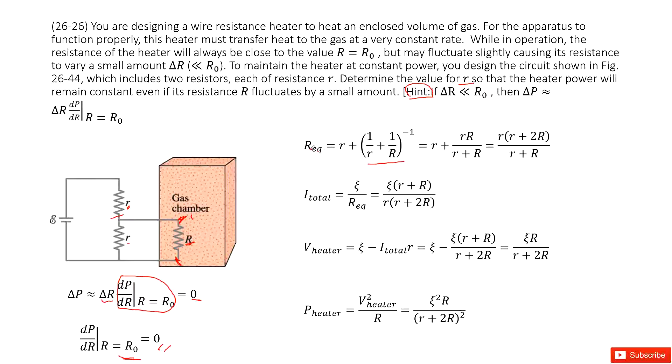And then we get the equivalent resistance for the circuit equal to this term. Now the I total, the current goes through the circuit, is just ε divided by equivalent resistance. Input the equivalent resistance, we get it equal to this term.